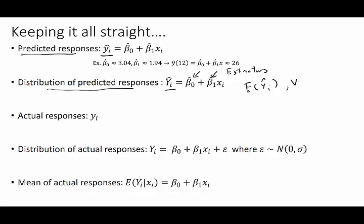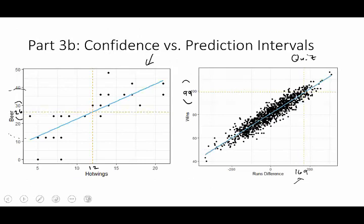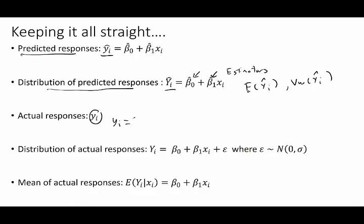We can talk about things like the expected value of Ŷ_i and the variance of Ŷ_i. But the actual data has multiple layers too. At the simplest level we have the actual responses — just the y_i data points. Going back to the last graphic, there was one customer who bought 12 wings and drank 30 ounces of beer, so for that data point y_i = 30.